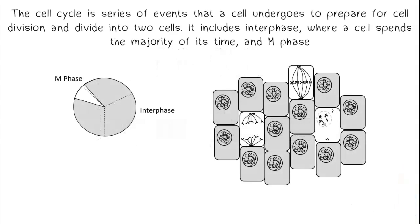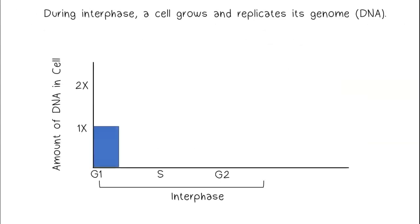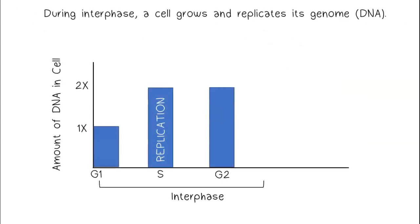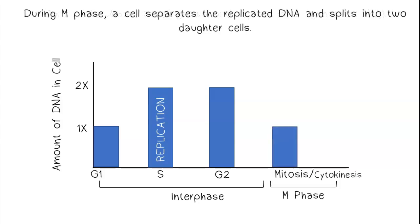The cell cycle is a series of events that a cell undergoes to prepare for cell division and divide into two cells. It includes interphase, where a cell spends a majority of its time, and M phase. During interphase, a cell grows and replicates its genome. During M phase, a cell separates the replicated DNA and splits into two daughter cells.